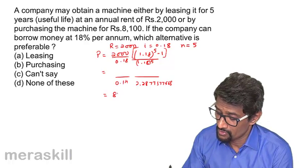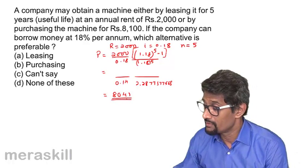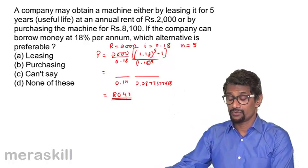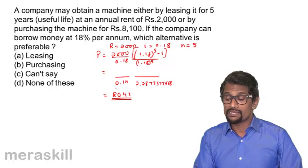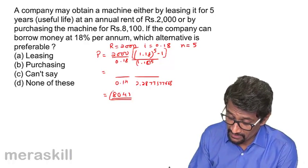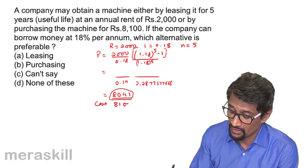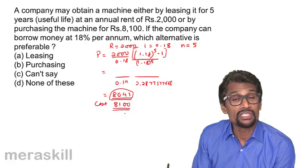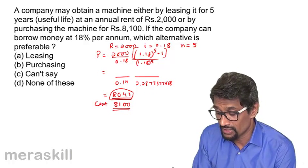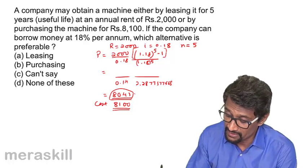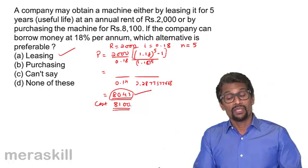This value turns out to around 8,041. The present value of all the leasing amounts paid is 8,041, while the machine cost is 8,100. The cost of the machine is more than the present value of the leasing amount. So definitely it's better to lease it out because leasing is cheaper than the purchase cost. Hence, leasing is preferable.